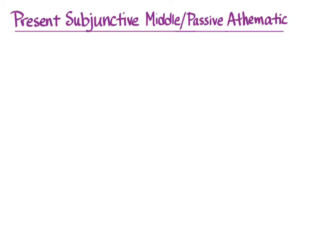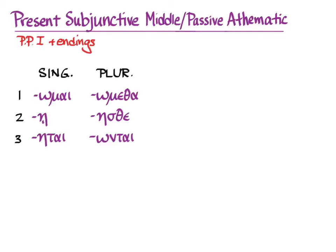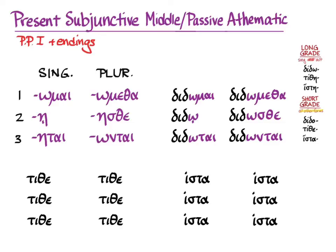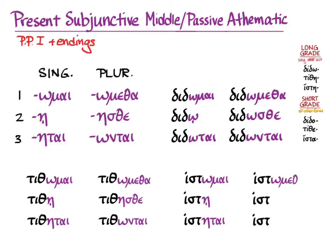The present subjunctive middle passive for athematic verbs comes from the first principle part with the middle/passive endings you already know. Again, it's not indicative, so we'll use the short grade stems. The rule is to combine those middle passive subjunctive endings with the short grade stems and treat them as contract verbs. In the second person singular of didomi, omicron contracts with eta-iota-subscript and becomes omega-iota-subscript — which differs from your standard omicron contract chart. Then tithemi follows as an epsilon contract and histemi as an alpha contract.